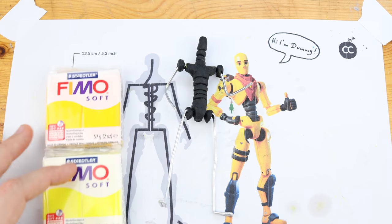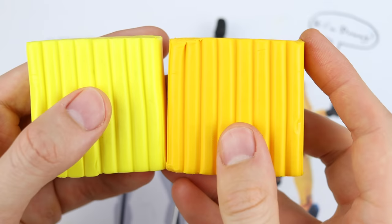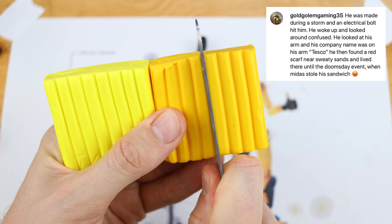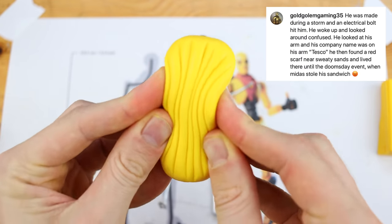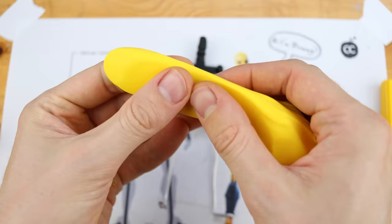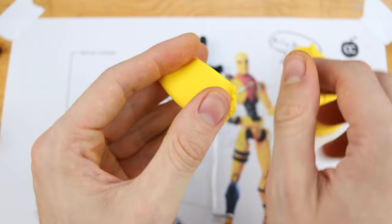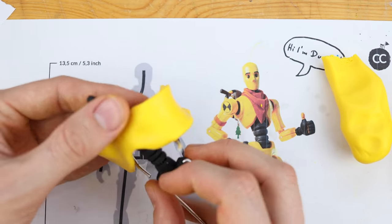Gold Golem Gaming 35 says he was made during a storm and an electrical bolt hit him. He woke up and looked around confused. He looked at his arm and his company name was on his arm, Tesco.